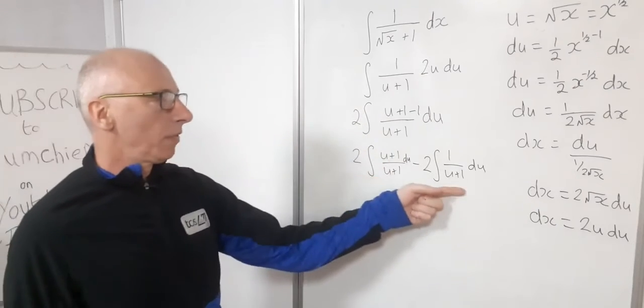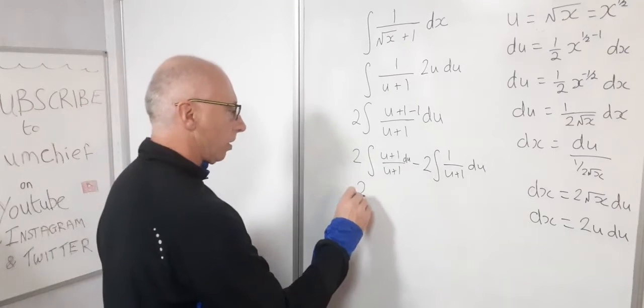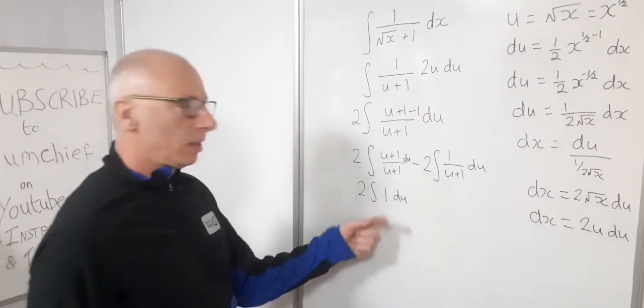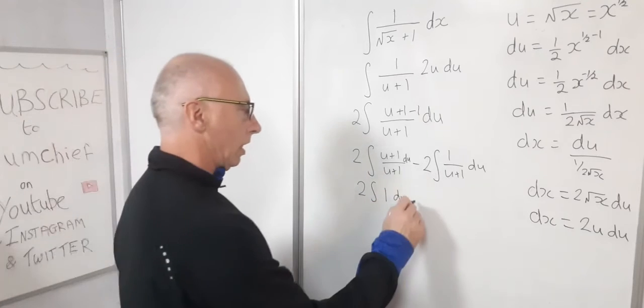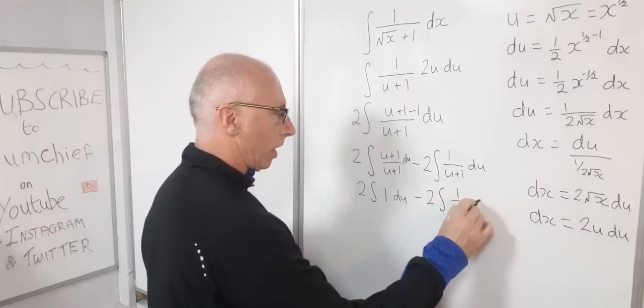So we can simplify these off and go straight into integration straight after. So we've now got two times the integral of one du. So that's very straightforward. And this one here looks like a very straightforward integral that we all know as well.